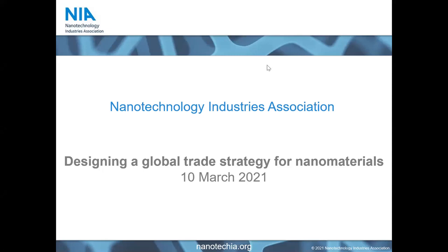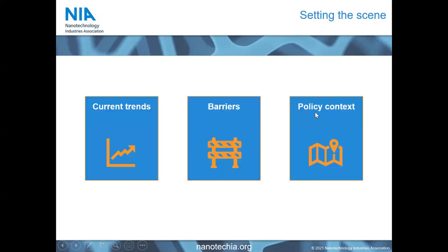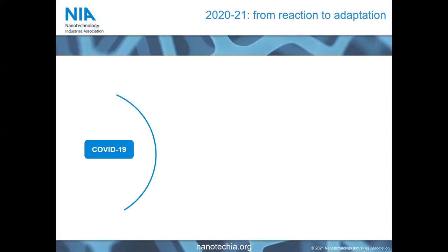Thank you and welcome to this NIA webinar. In this first presentation we'll cover the general perspective on global trade — current trends, upcoming developments, and the barriers we can expect. Trade experts have defined 2021 as a bounce-back year after the disruptions caused by COVID, and a number of developments forced on supply chains during the pandemic might actually remain with us for the longer term.